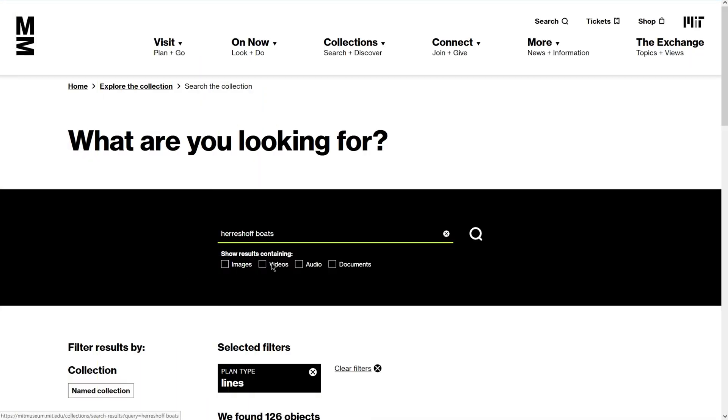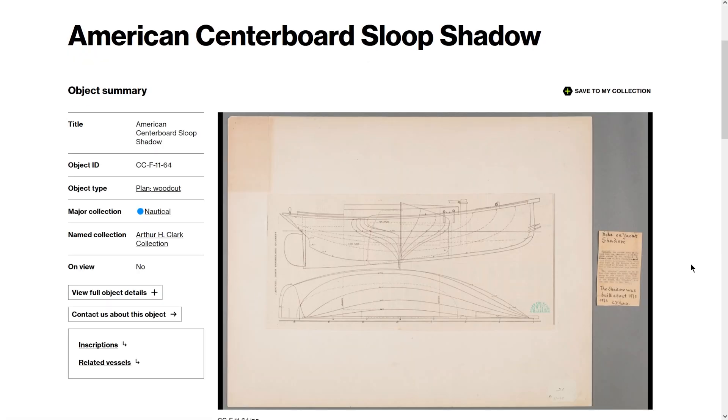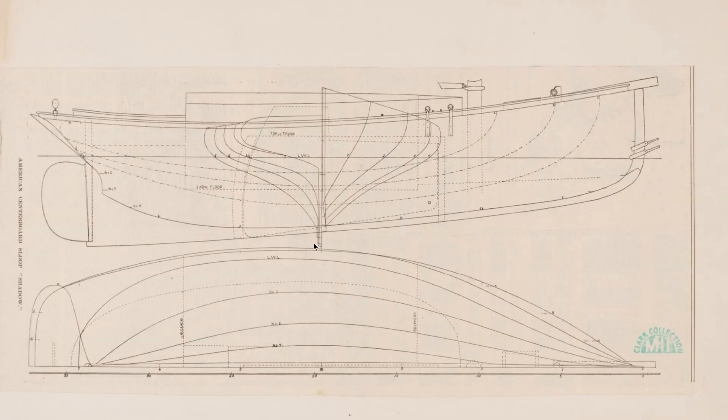Let's try lines. Okay, this is what I'm looking for here. Okay, here's one. So this is a 35-foot yacht named Shadow. This is exactly what I'm looking for.